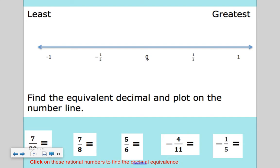Zero is in the center of this number line. The positive rational numbers are to the right. The negative rational numbers are to the left.